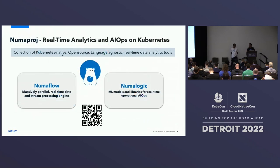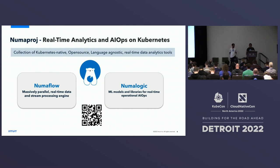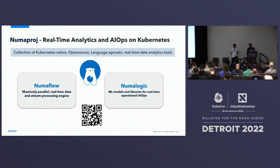To derive this actionable insight at scale, we needed a platform — an AIOps platform — that can scale. And that's how Muma Proj was born. Muma Proj is a Kubernetes-native data processing and analytics tool. It consists of two areas: one is Muma Flow, which deals with data processing — making it easy, scalable, and reliable — and Muma Logic, which we are open sourcing, containing a lot of the models we use internally that run on Muma Flow. You will learn more about this project as we go through the presentation.